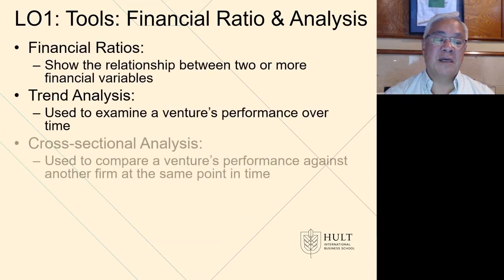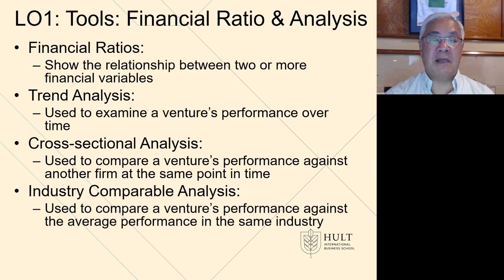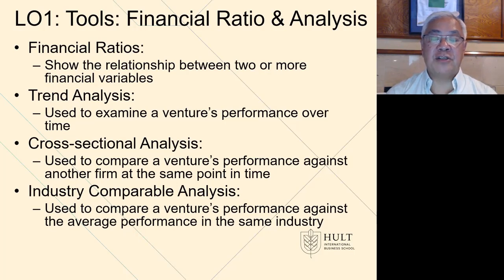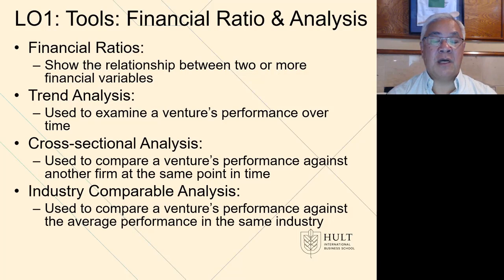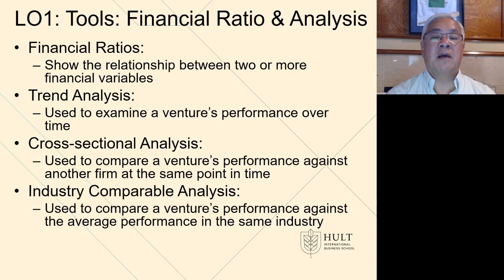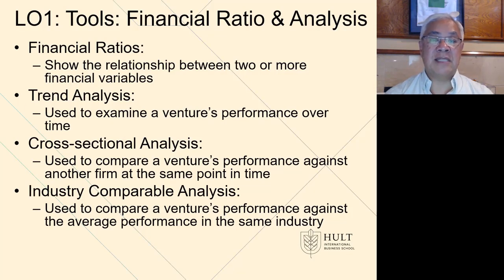So, tools. We have four things: ratios; trend analysis, which usually means over time for an organization; cross-sectional, which we sometimes call vertical and horizontal analyses, where you dissect either a company over time or a number of different companies in the same industry to compare their relative profitability and cost structure; and fourth, industry comparables to look at your company versus the industry averages and see how you stack up.